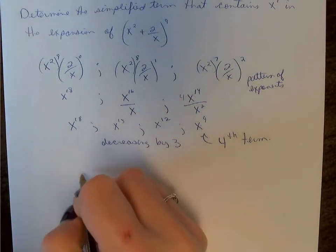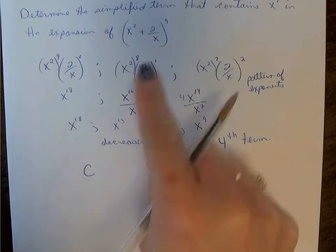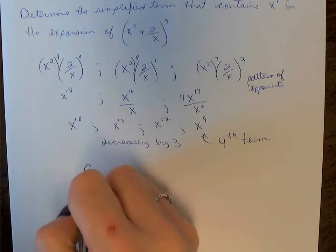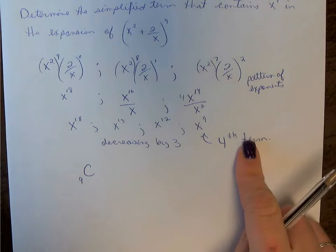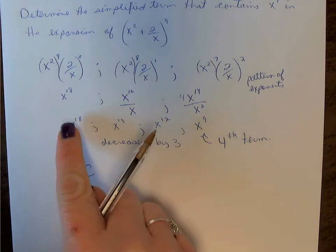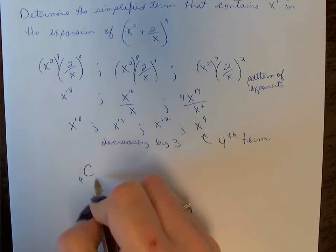To find the 4th term, we're going to choose our combination. 9 is our n value. Our r value is always 1 less than the term we are finding because we would count up. In fact, you can see that: it would be 0, 1, 2, 3. So r is 3.